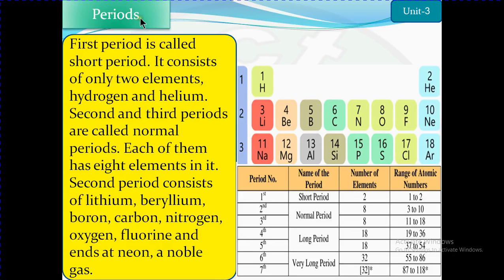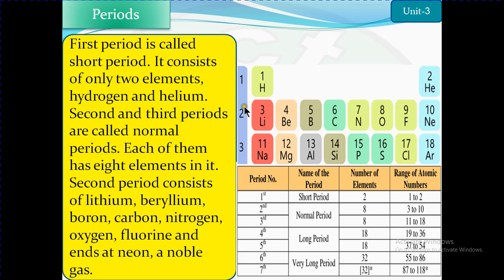Periods are horizontal lines in the periodic table. The first period is called the short period — it consists of only two elements: hydrogen and helium. This is why we call it a short period, because it has only two elements, with atomic numbers ranging from one to two.